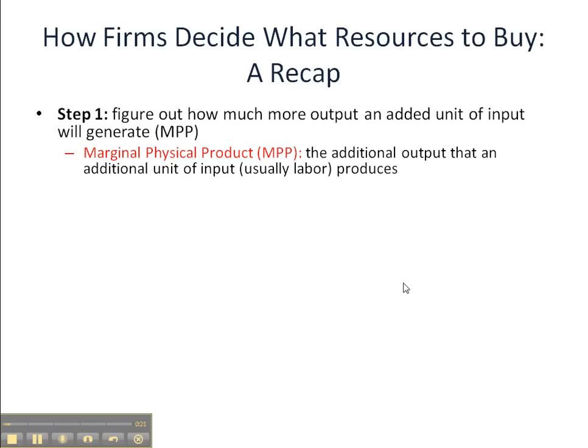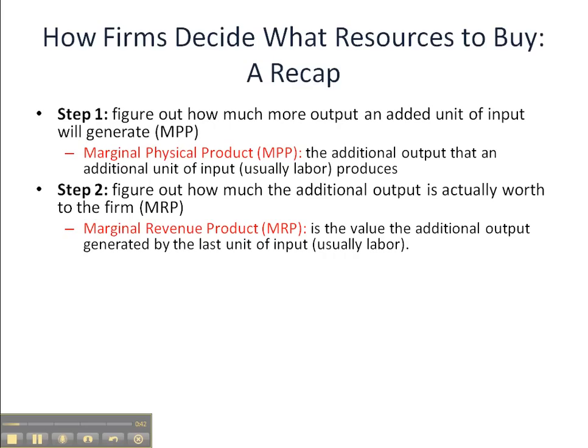The first step in analyzing how firms decide what resources to buy is we have to figure out the marginal product — how much more output an added unit of input will generate. Sometimes that's called marginal product and sometimes marginal physical product. The second step is to figure out how much the additional output is actually worth to the firm. That concept is known as marginal revenue product, or MRP, which can be found by multiplying the marginal product by the marginal revenue.